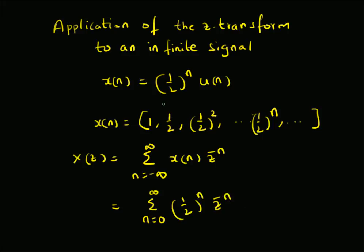That is the Z transform of (1/2)^n * u(n). We can simplify it further by rewriting the summation as n = 0 to ∞ of (1/2 * z^(−1))^n. This now looks like a power series expansion.